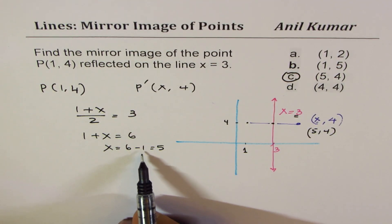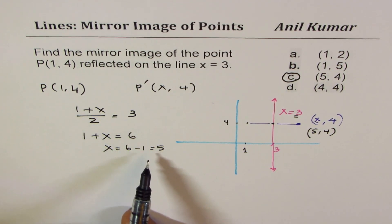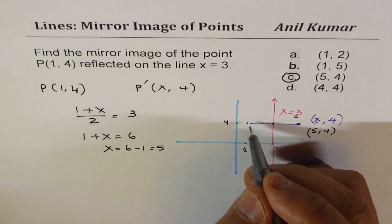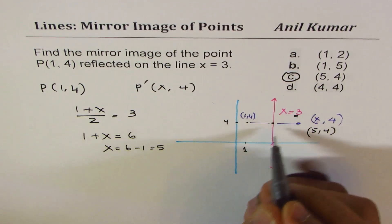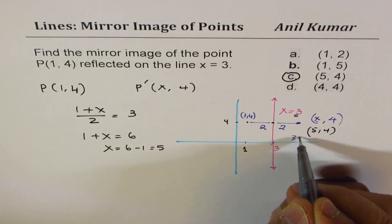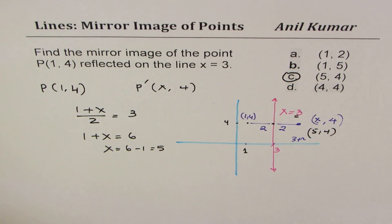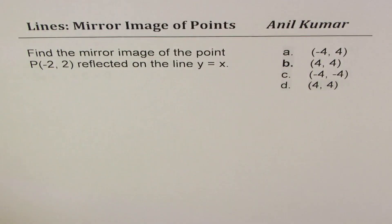You can find this using algebra as shown, or alternatively: from the point x = 1 to the line x = 3 is 2 units, so go 2 more units past the line — 3 plus 2 equals 5. So you get your answer. Like this, you can very easily get your answer if you are reflecting about a line which is parallel to one of the axes.